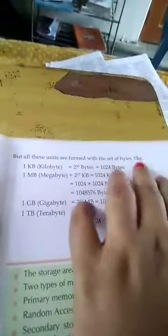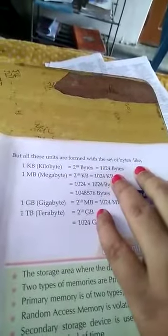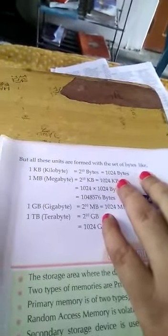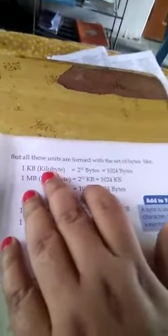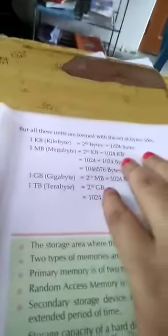But all these units are formed with the set of bytes. 1 KB (kilobyte) is equal to 2 to the power 10 bytes, which is equal to 1024 bytes.